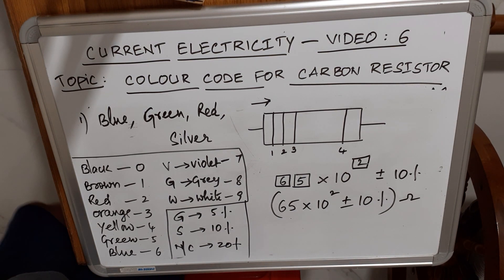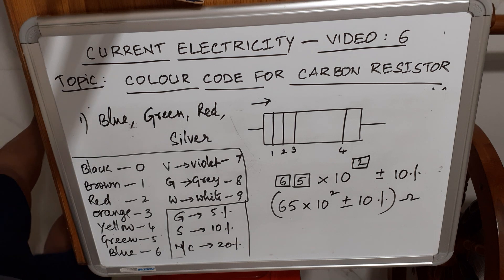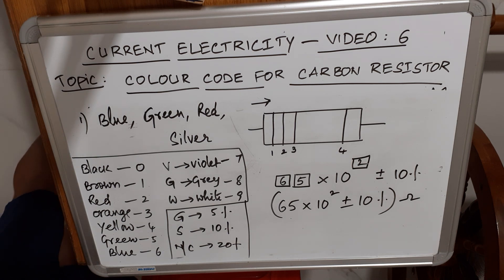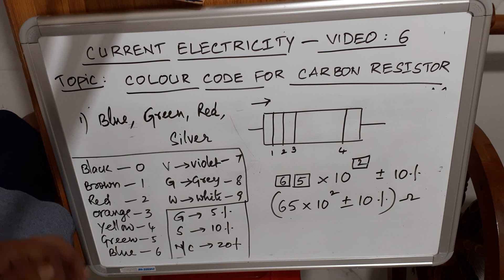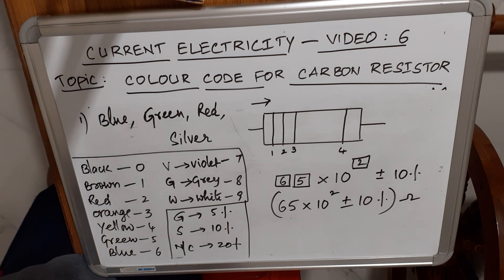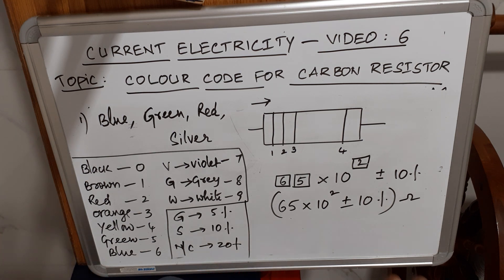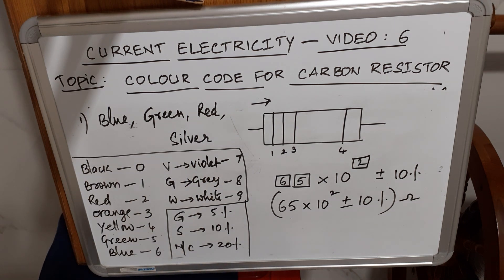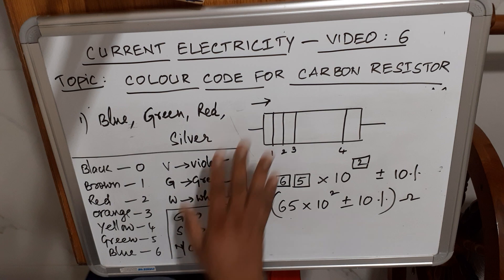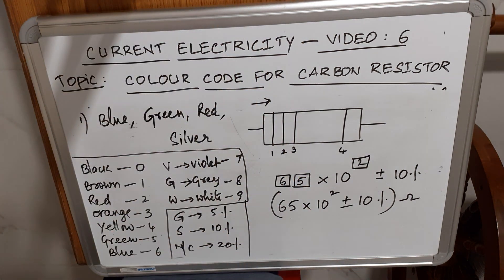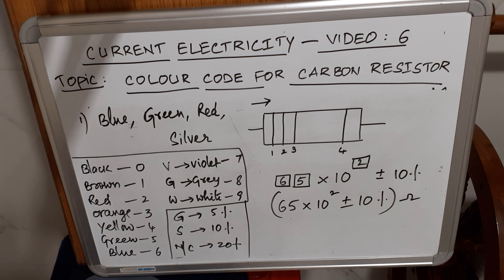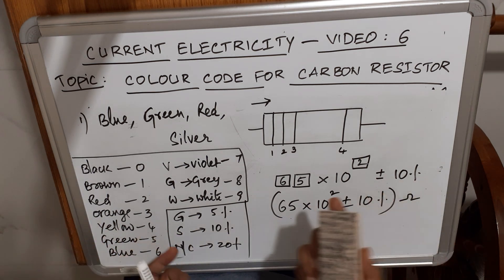So the color sequence must be remembered, and from the given sequence you obtain the resistance value. Alternatively, given the resistance value, you determine the color sequence. This used to be asked for one mark in board exams, but nowadays it is considered a simple and somewhat outdated concept.